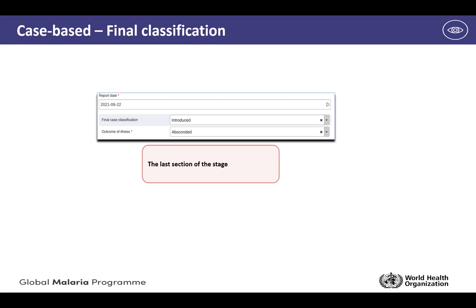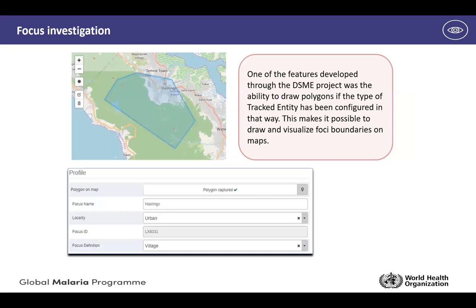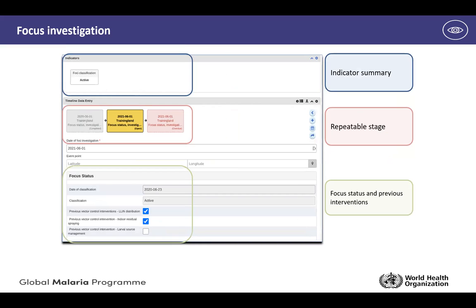More features were built around adding relationships — whether it's a focus to a case, a case to a foci, and so on. Through the DSME project, one of the main features was the ability to draw polygons within the application, making it possible to draw and visualize foci boundaries on maps. The next step is the foci investigation and the core variables needed to fill out this section.